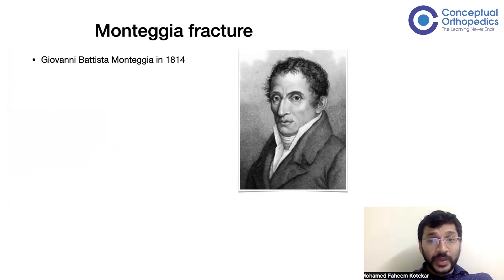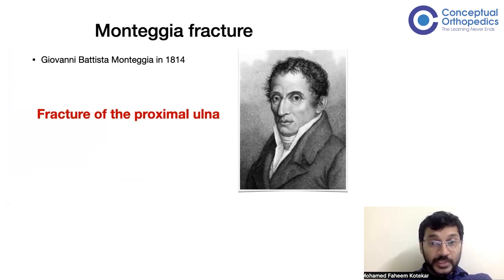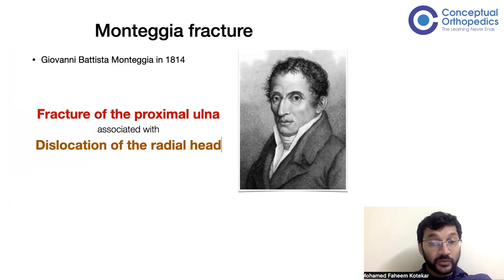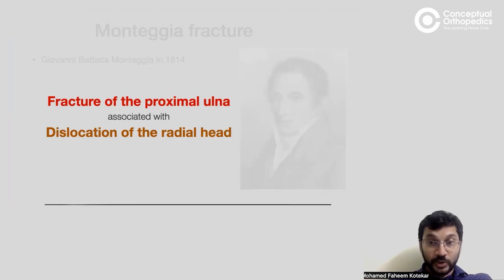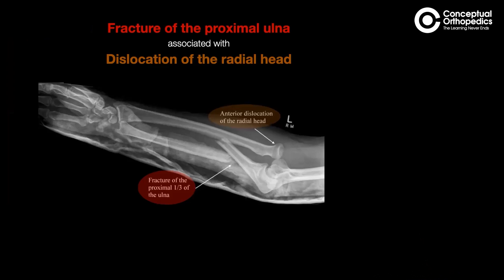Monteggia fracture was described before the era of X-rays, when Giovanni Battista Monteggia described it in 1814. He described it as a fracture of the proximal ulna which is associated with a dislocation of the radial head. So there are two components: the first is a fracture of the proximal ulna, and the second is a dislocation of the radial head.